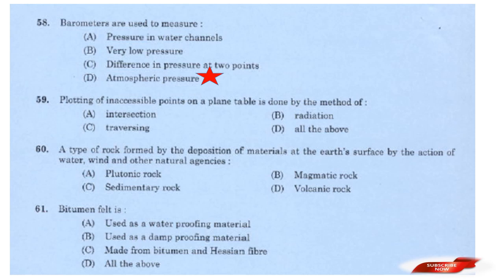Question: Plotting of inaccessible points on the plane table is done by the method of? Options: Intersection; Radiation; Traversing; All the above. Answer: Option A — Intersection. Plotting of inaccessible points on the plane table is done by the method of intersection.